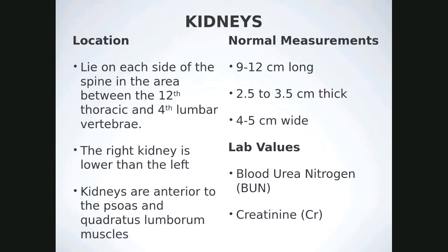There are two kidneys, one on each side of the spine between the 12th thoracic and 4th lumbar vertebrae. The right kidney is slightly lower than the left because it's displaced by the liver. Kidneys are anterior to the psoas and quadratus lumborum muscles. Normal measurements: 9 to 12 centimeters long, 2.5 to 3.5 centimeters AP, and 4 to 5 centimeters wide. Lab values pointing to the kidneys are BUN and creatinine.